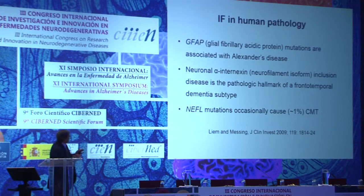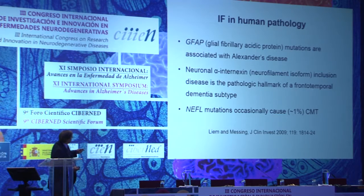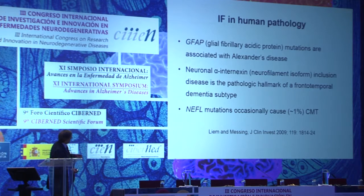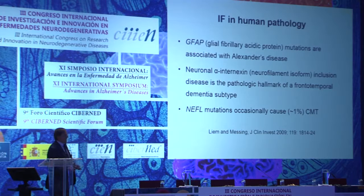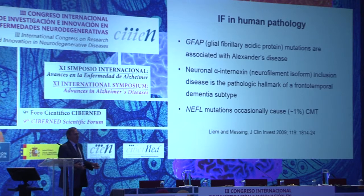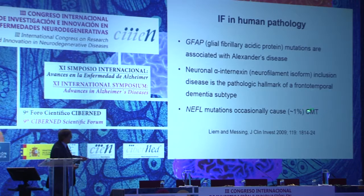Here we can see three examples of intermediate filament abnormalities in human pathology. GFAP mutations are associated with Alexander disease, which is a type of leukodystrophy. Neuronal alpha-internexin inclusion disease is the pathological hallmark of a frontotemporal dementia subtype. And finally, NEFL mutations are associated in about 1% of cases with CMT.